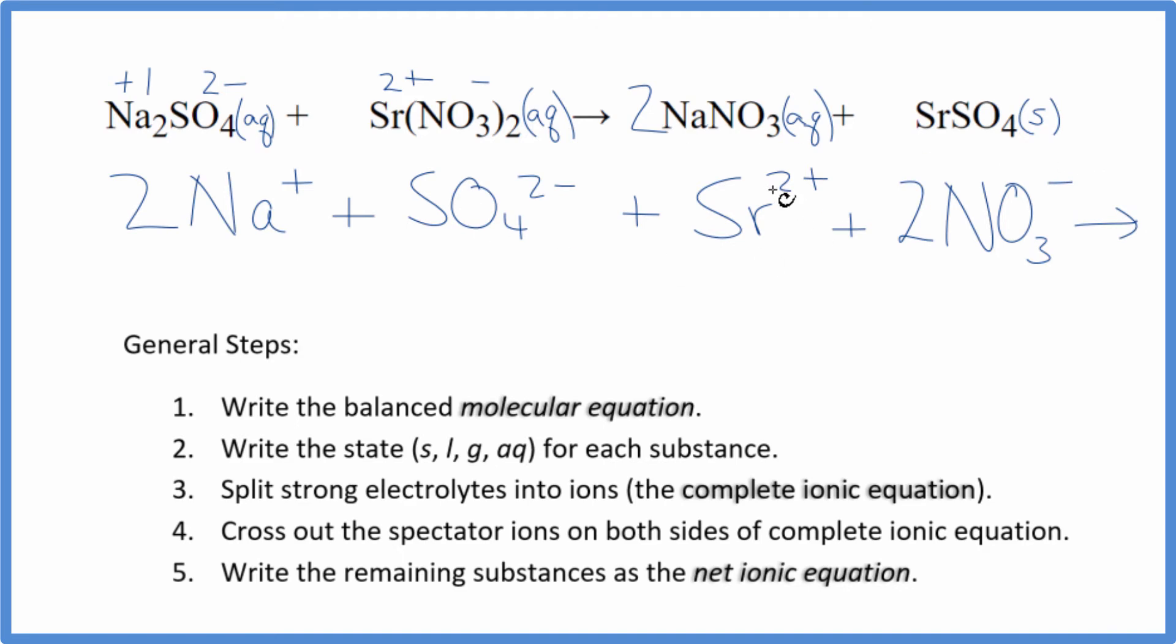And these are the reactants in our complete ionic equation. In the products, we have a plus and a minus. So 2 sodium ions, just like in the reactants, plus 2 nitrate ions. And then with net ionic equations, we don't split solids apart. We're just going to write SrSO4, strontium sulfate. And this is what we call the complete or total ionic equation.